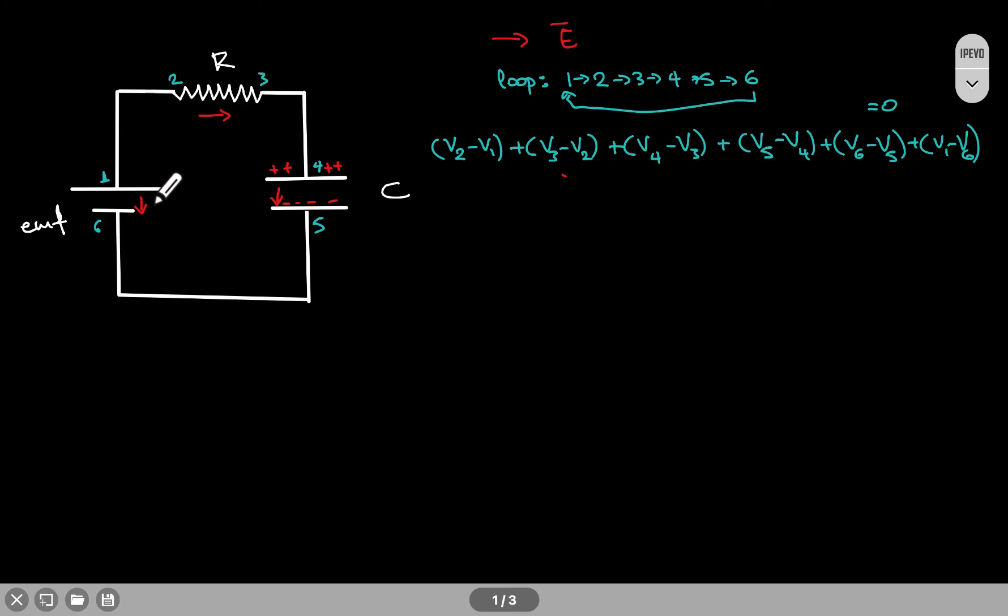I have drawn with red arrows the direction of the electric fields around the circuit, and I have also indicated some positions, 1, 2, 3, 4, 5, 6, just so I can show what the loop is.